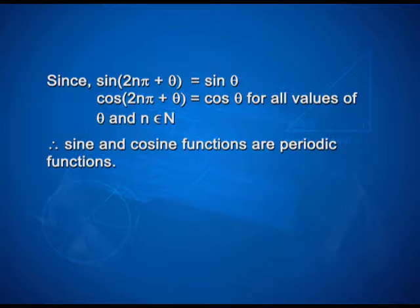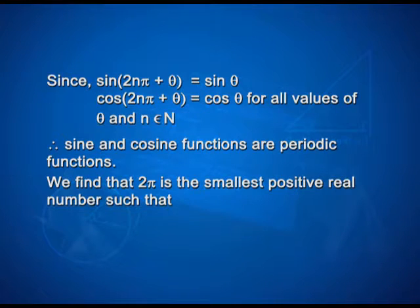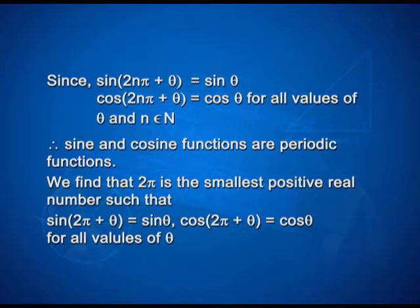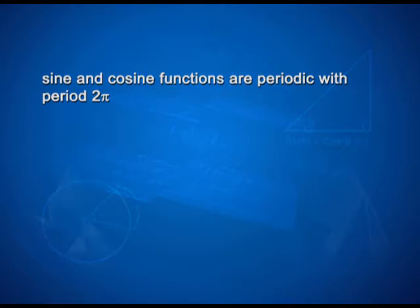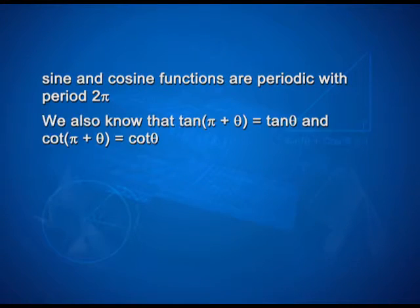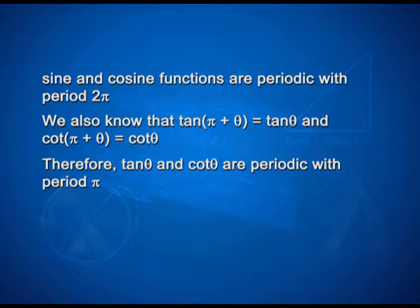Therefore, sin and cosine functions are periodic functions with period 2π. We also know that tan(π + θ) = tan θ and cot(π + θ) = cot θ. Therefore, tan θ and cot θ are periodic with period π. Similarly, cosec θ and sec θ are periodic functions with period 2π.